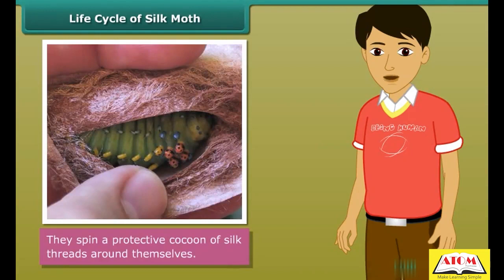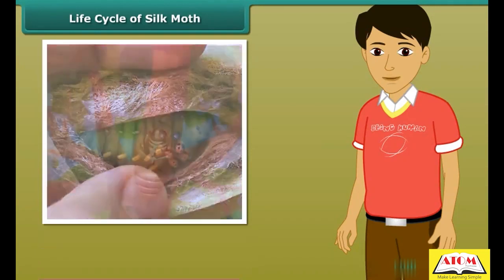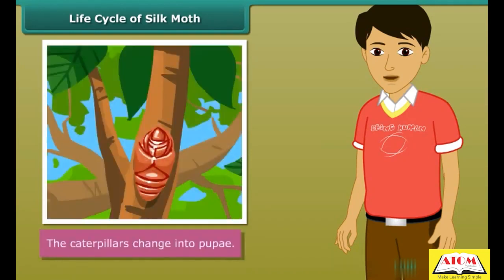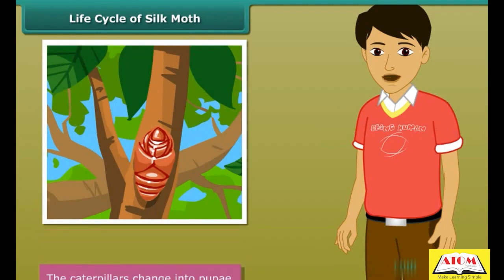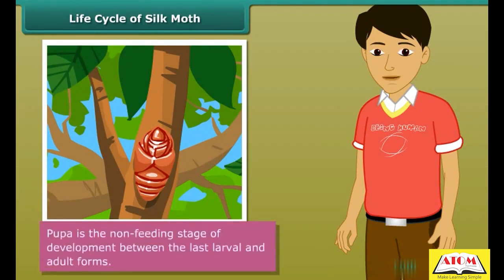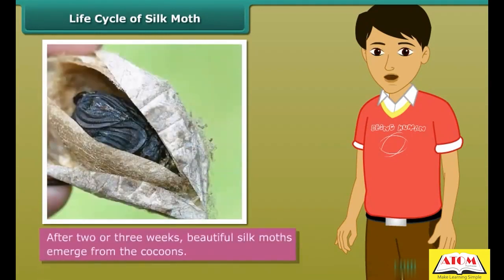The caterpillars then spin a protective cocoon of silk threads around themselves. These cocoons are white or golden in color. Inside the cocoon, the caterpillars change into pupae. As long as the caterpillars pupate, they do not eat. After two or three weeks, beautiful silk moths emerge from the cocoon.